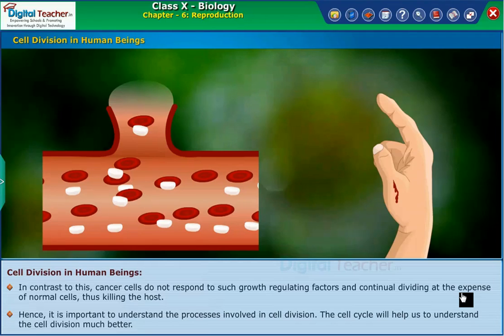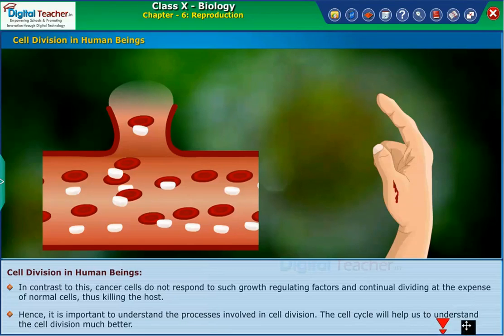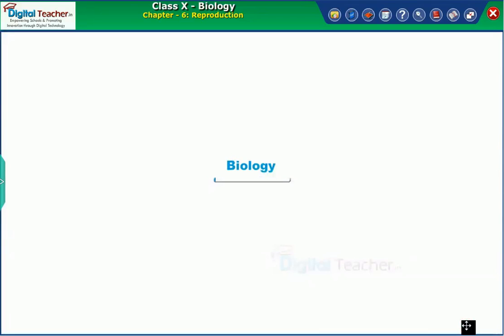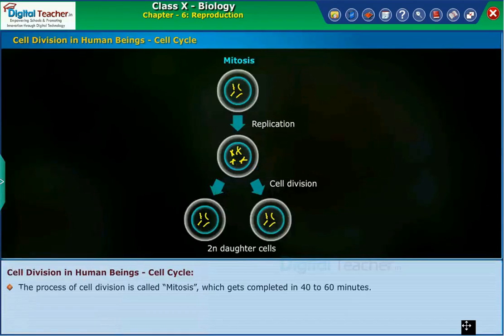The cell cycle will help us understand cell division much better. Now let us learn about the cell cycle. The process of cell division is called mitosis, which gets completed in 40 to 60 minutes.